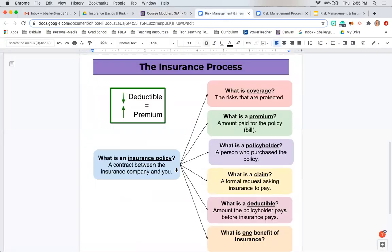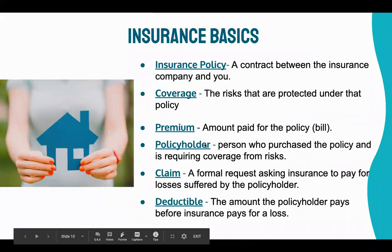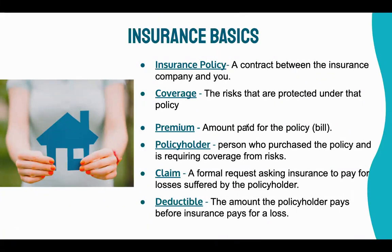Let's open the risk management and insurance notes so we can complete those. Here is some terminology. The first one is an insurance policy — that is essentially a contract between you and the insurance company. It outlines your coverage, how much you'll pay monthly, bi-yearly, or yearly, your deductible, any exclusions, and who is covered. It is not a short one-page document; it's normally several pages, and you will have one for every type of insurance you purchase.